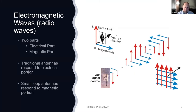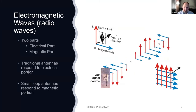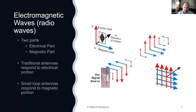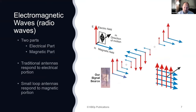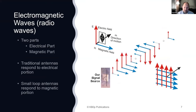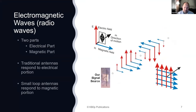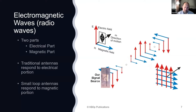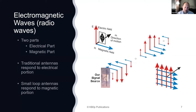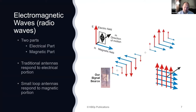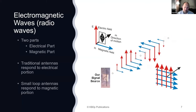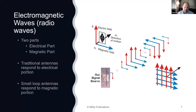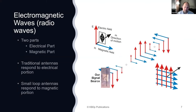You can see this representation here. We have our electrical component and our magnetic component, and you can see they're out of phase with each other at different angles. Our antenna here radiates a signal outward, and you can see the two portions of the wave as it's radiated out in a given direction.